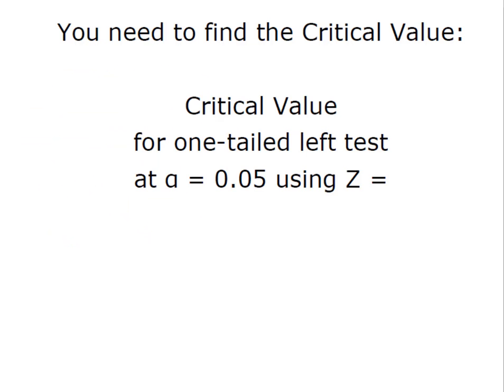If we're using a critical value approach, we need the critical value for a one-tailed left test at alpha of 0.05. Because we use normal approximation, we're going to use a z-score. The standard value for a one-tailed left test at alpha of 0.05 is negative 1.645. Now we have our critical value.